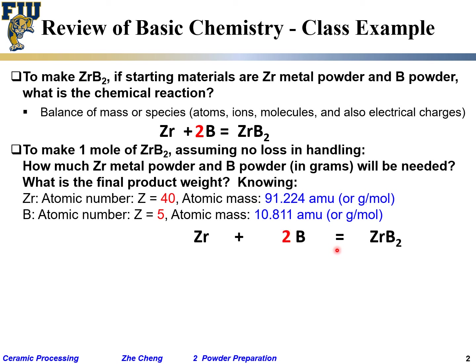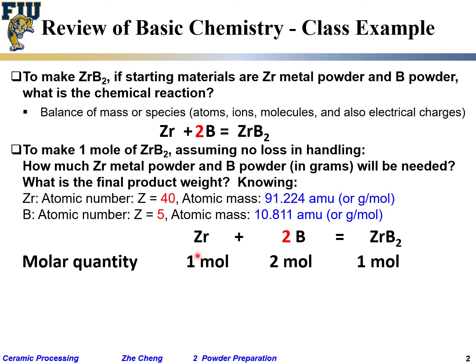Based on the balanced equation Zr + 2B → ZrB₂: to make one mole of ZrB₂, I need one mole of zirconium and two moles of boron. In terms of molar quantities: 1 mol Zr, 2 mol B, and 1 mol ZrB₂ product.